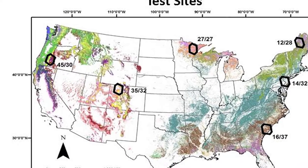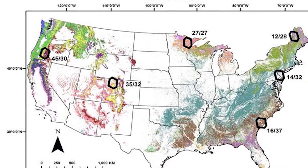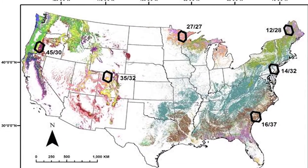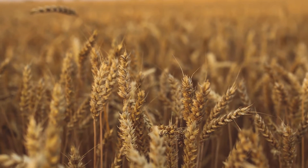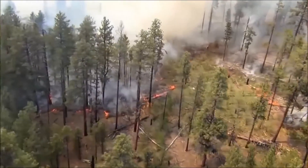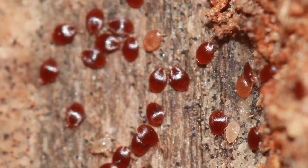Our goal is to map forest disturbances — that is, harvests, fires, and insect outbreaks — across the United States since 1984.